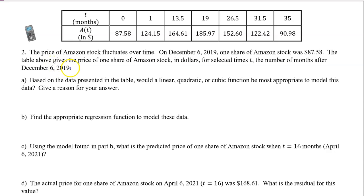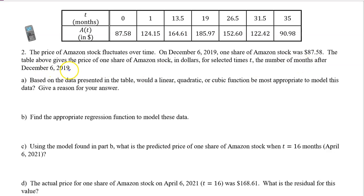Let's practice our regression skills one more time. Number 2. The price of Amazon stock fluctuates over time. On December 6th, 2019, one share of Amazon stock was $87.58. The table above gives the price of one share of Amazon stock in dollars for selected times T, the number of months after December 6th, 2019.